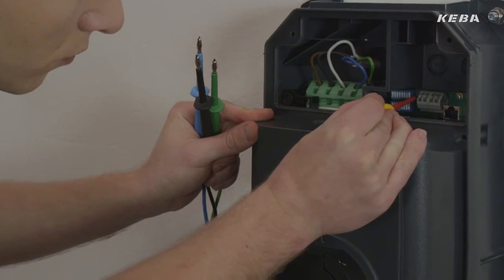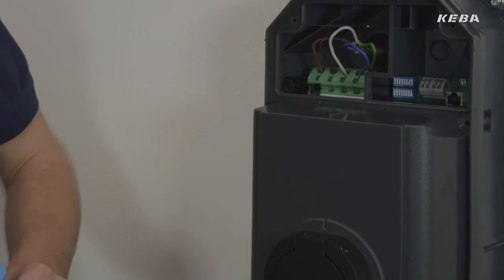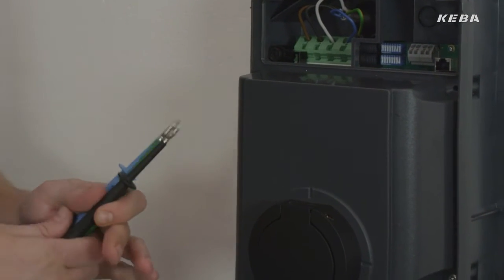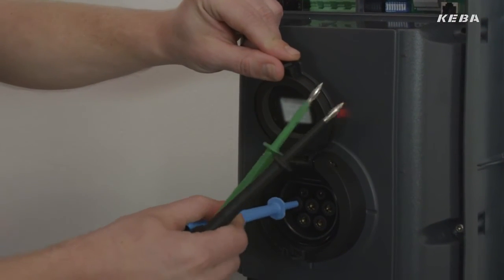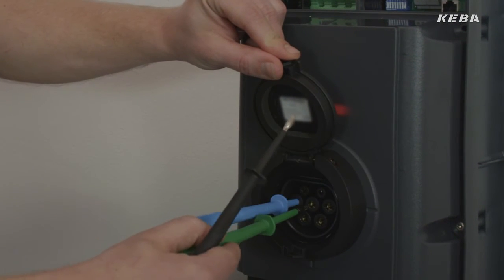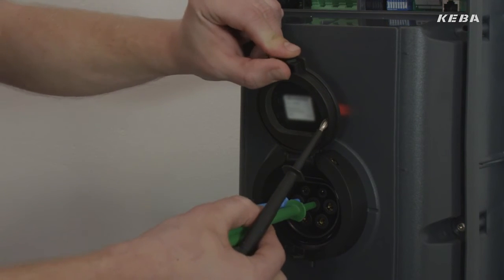By using the dip switches, the wallbox is also brought into commissioning mode. The KeyContact P20 first performs a self-test and then allows testing of the installation. With this feature, an often expensive vehicle simulator is superfluous.